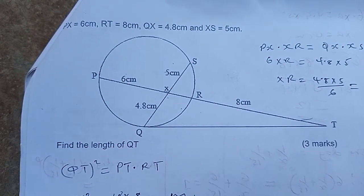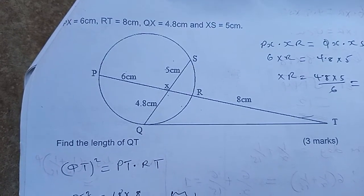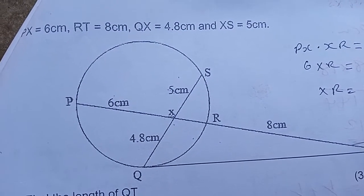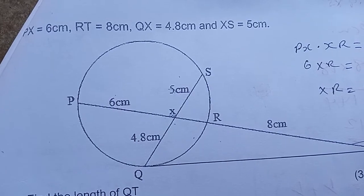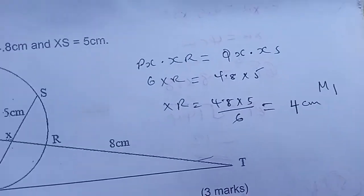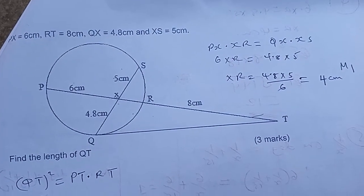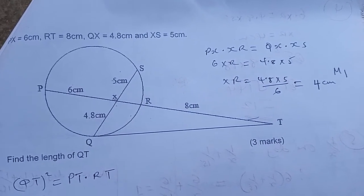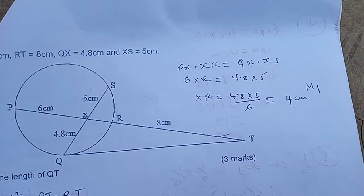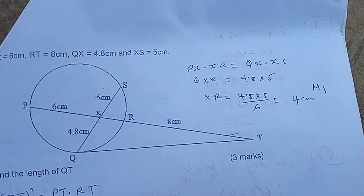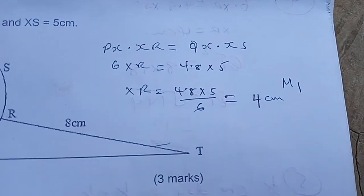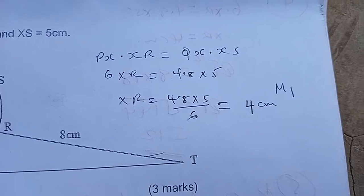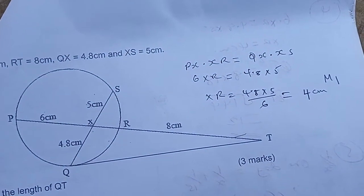Find the length of QT. Now for intersecting chords of a circle, we know that PX×XR should be equal to QX×XS. And therefore, if they want us to get QT, before we get that, we have to get length XR first of all. So, PX multiplied by XR should give us QX multiplied by XS. And you can see PX is 6 cm.